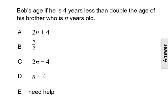Translate Bob's age if he is four years less than double the age of his brother who is n years old into an algebraic expression. We're told that his brother is n years old, so that's our variable we can use. That's what we can start with.